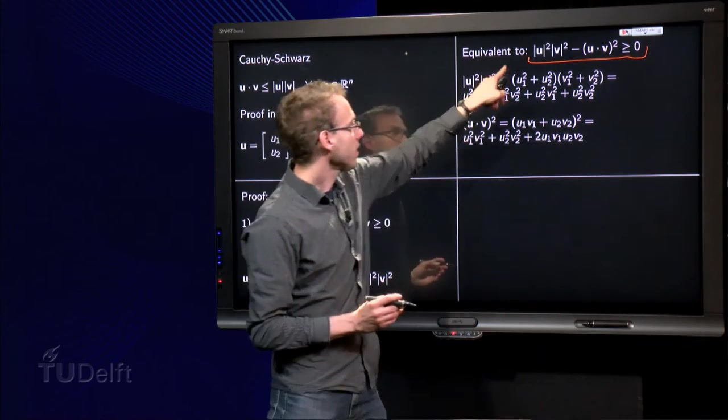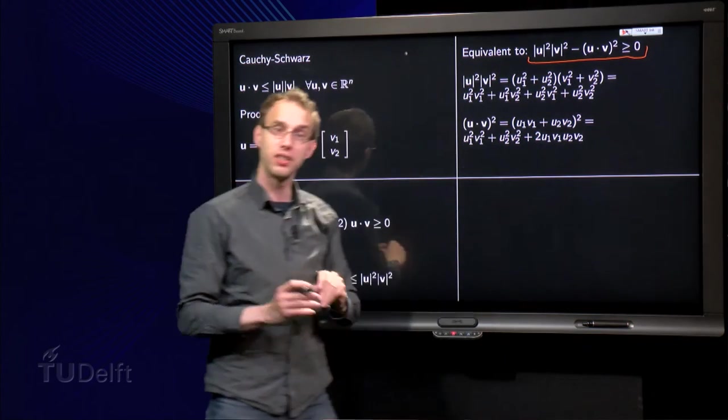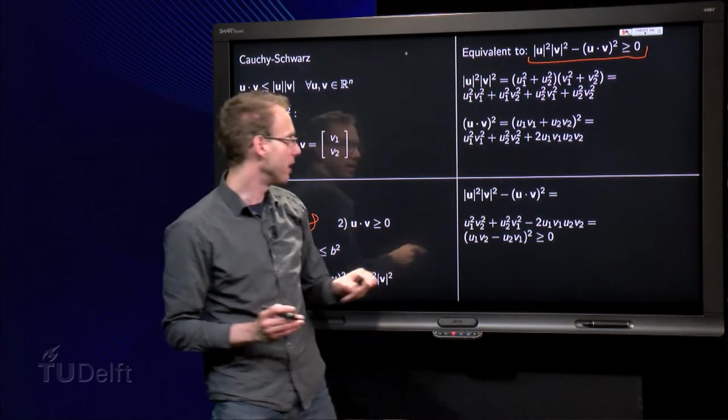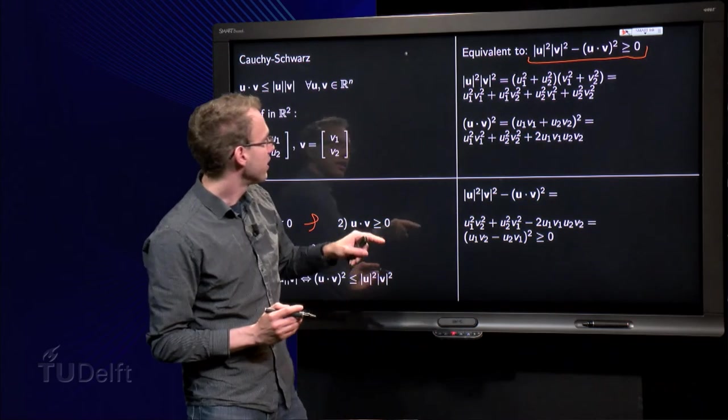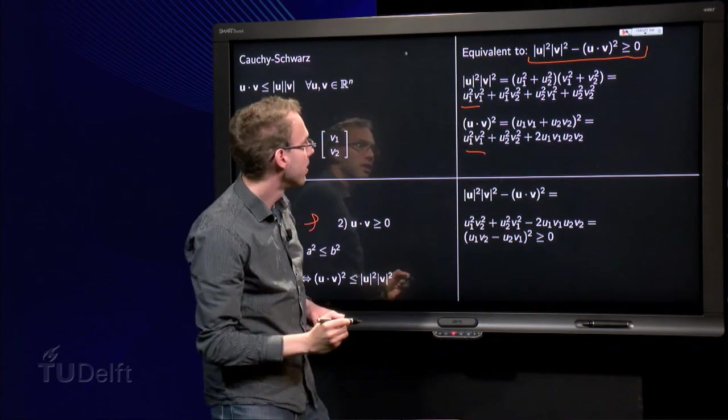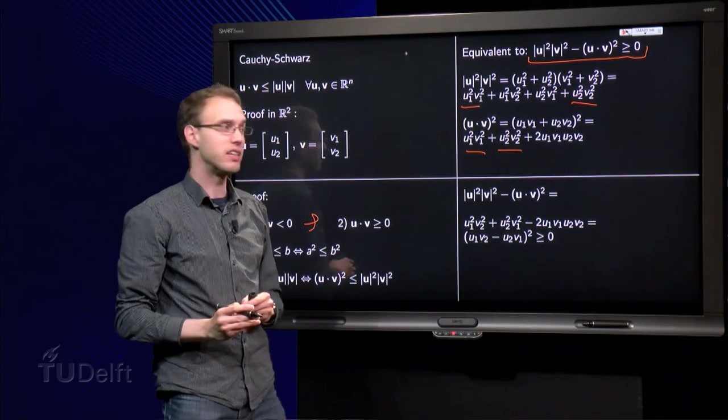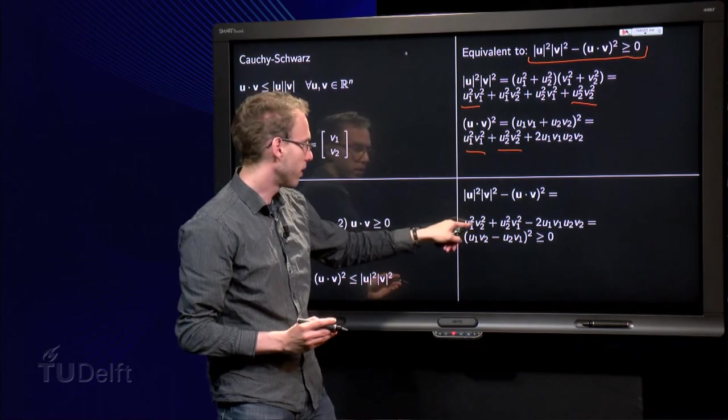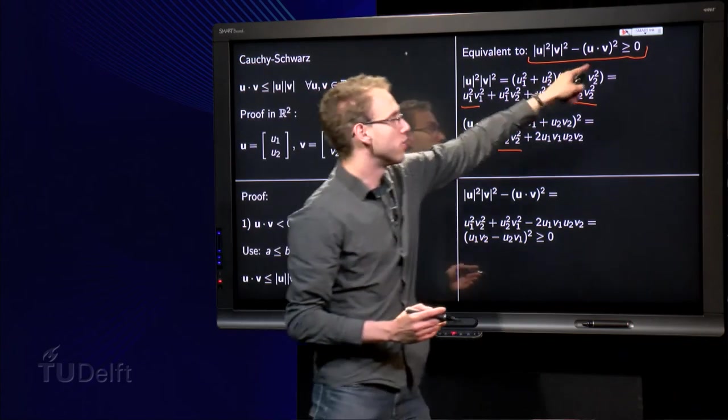And then we have to take the difference of those two terms. So, ||u||²||v||² minus (u·v)². And then I think you already see something nice happening. If you take the difference over here. Because, let's take a look. These terms over here cancel out. And these terms here cancel out. So, if you take the difference, this term and that term and that term are left. So, u₁²v₂² + u₂²v₁² minus 2u₁v₁u₂v₂.